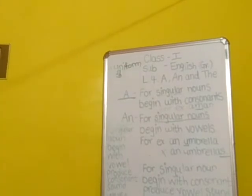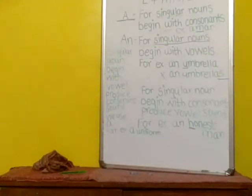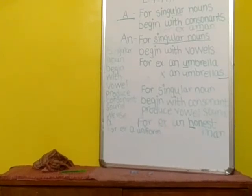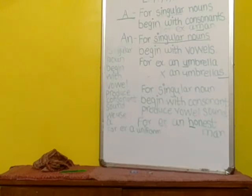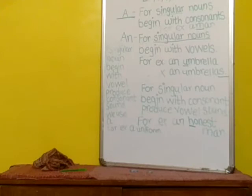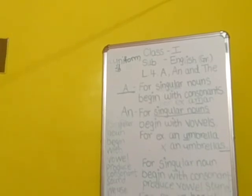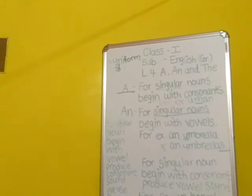We have completed this 'a' and 'an' exercise. I hope you understood. You should practice at home — whatever things you see at home like cushion, sofa, bed, or bag — if they are singular in number, use the correct article 'a' or 'an' in front of them. In our next period I will explain the use of article 'the'.